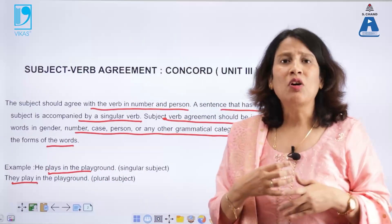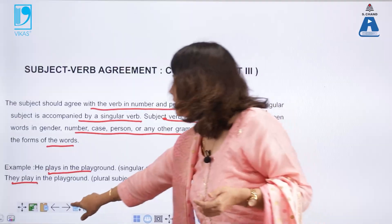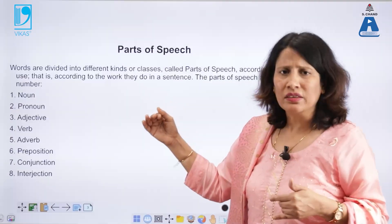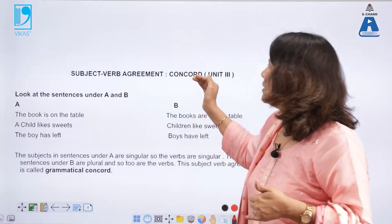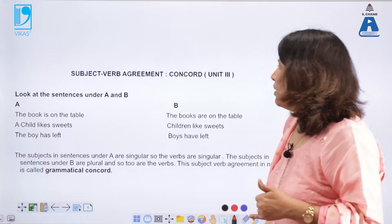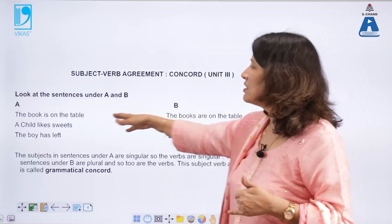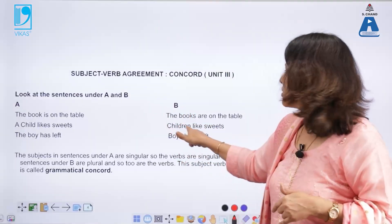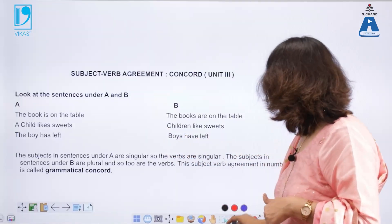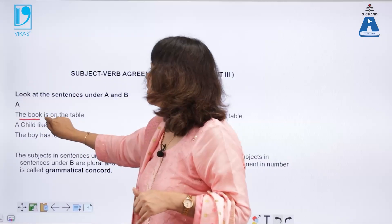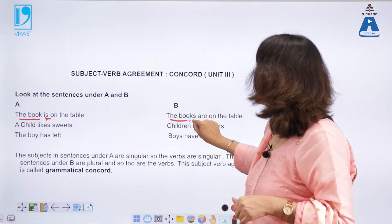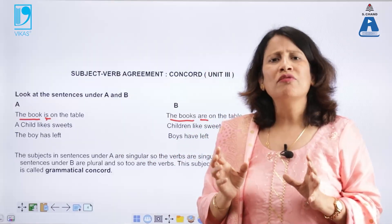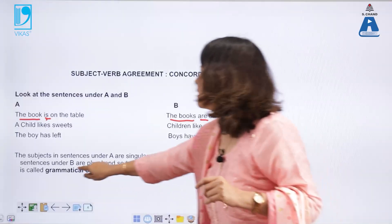This subject-verb agreement concept is known as concord. Now let us look at sentences under columns A and B. 'The book is on the table' versus 'The books are on the table.' 'Child likes sweets' versus 'Children like sweets.' 'The boy has left' versus 'Boys have left.' When it is a singular subject we use the verb 'is'; when it is a plural subject like 'the books,' the verb is 'are.' So we can see this agreement where the same number of verb follows the same number of subject — this is known as grammatical concord.